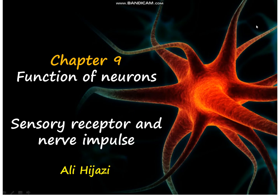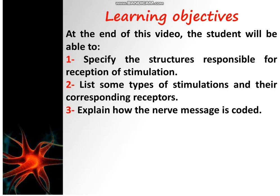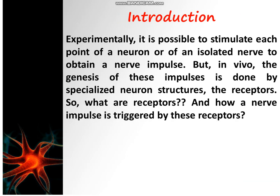This video is about sensory receptors and nerve impulse. At the end of it, the student will be able to specify the structures responsible for reception of stimulation, list some types of stimulations and their corresponding receptors, and finally to explain how the nerve message is coded.